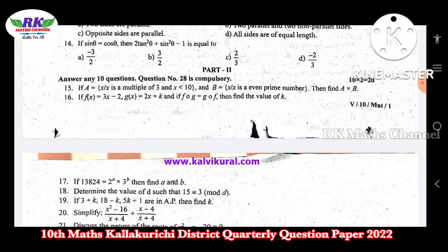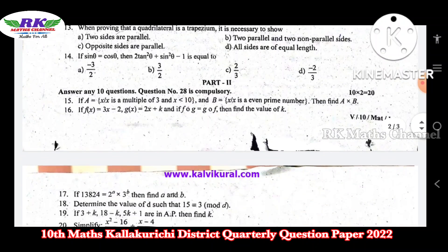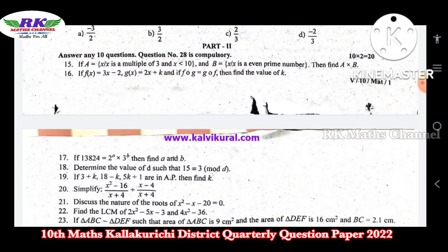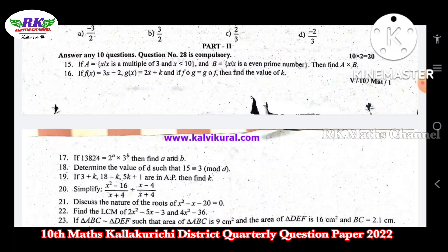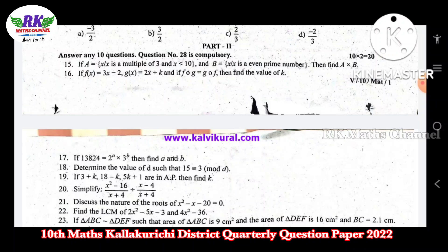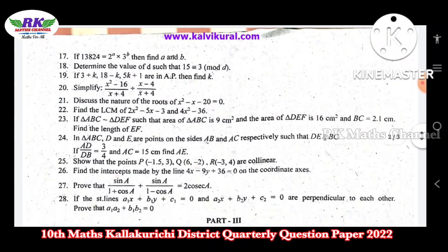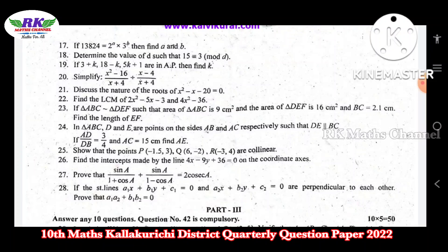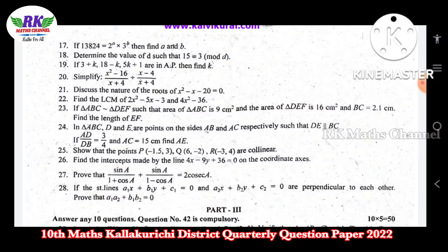You can use the PDF link from the description. Question number 16 is F of G of G. We use the K value. Question number 17: 13,824 equals 2 power a into 3 power b — find the values of a and b, then find the mod.